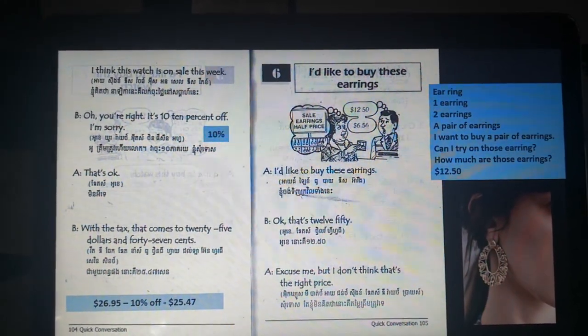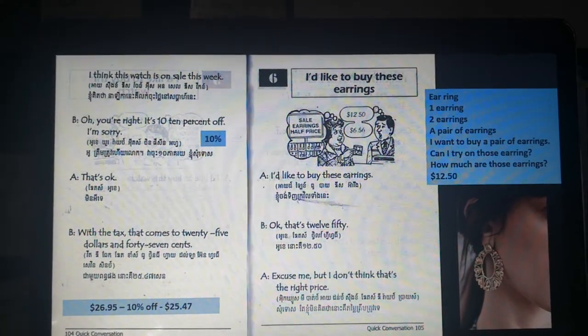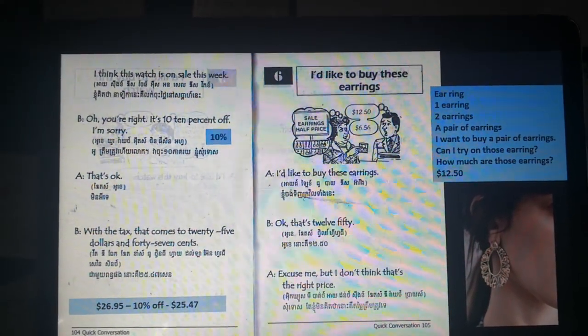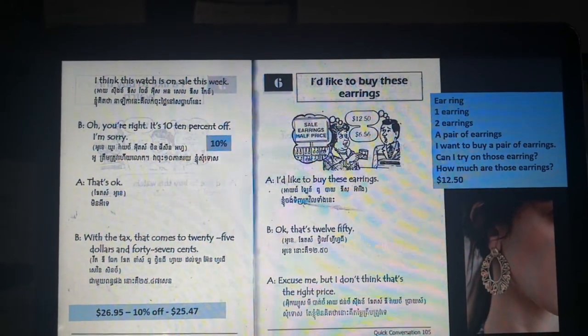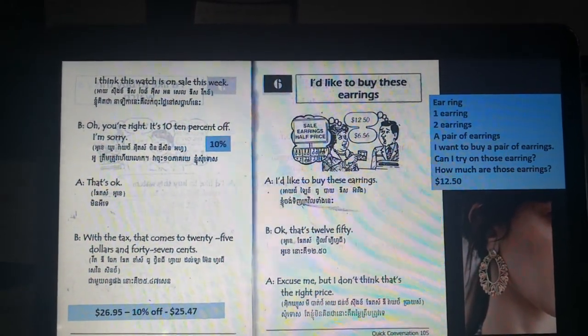Okay, Joseph, Katie, Antonia. I'd like to buy these earrings. Okay, that's $12.50.